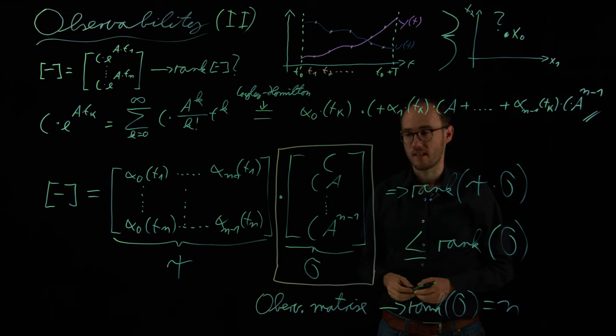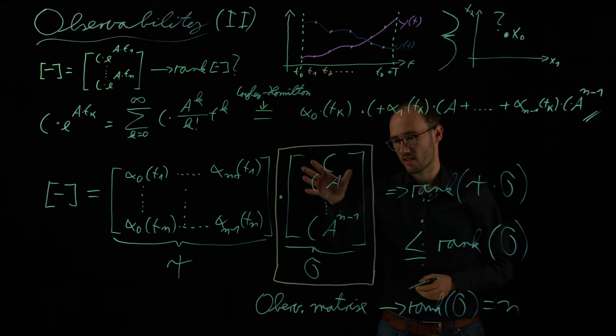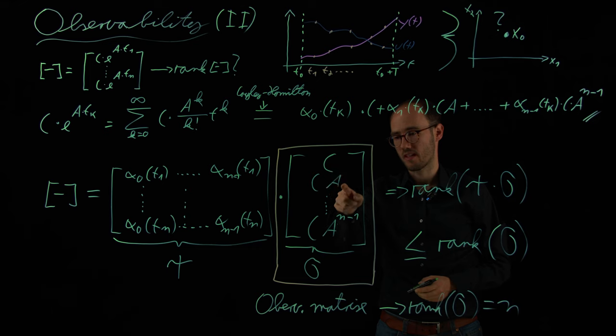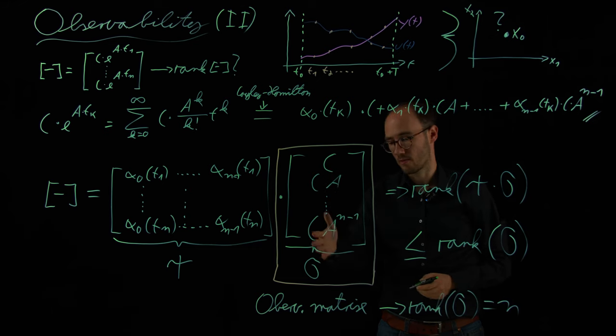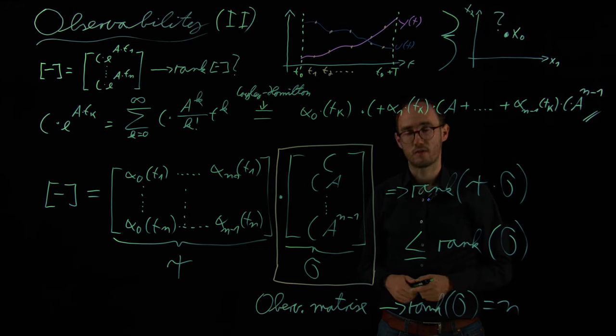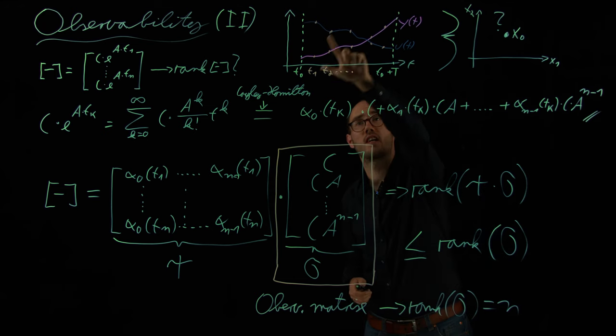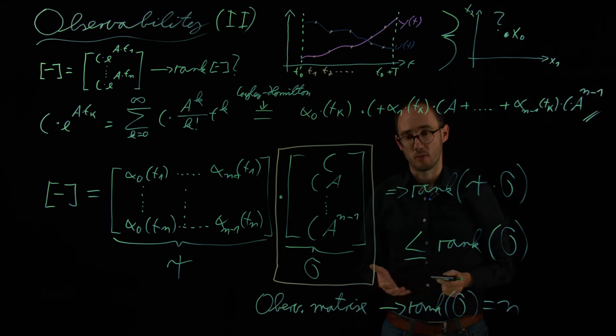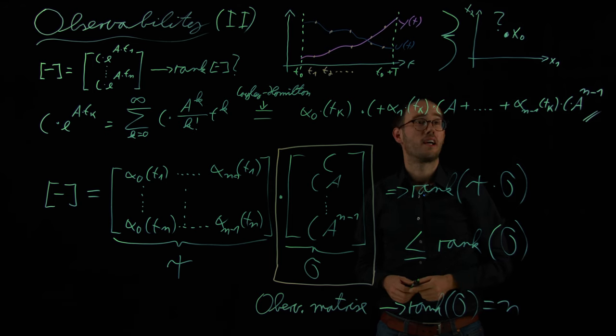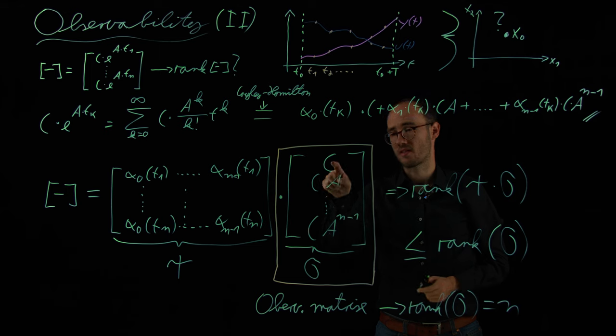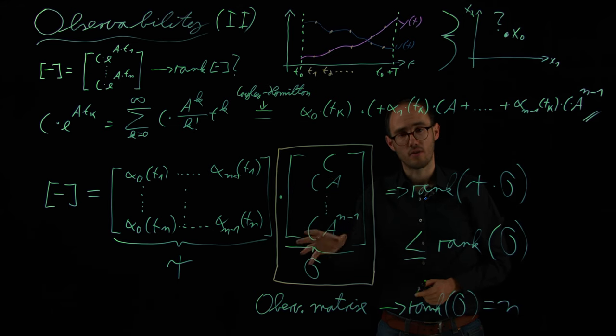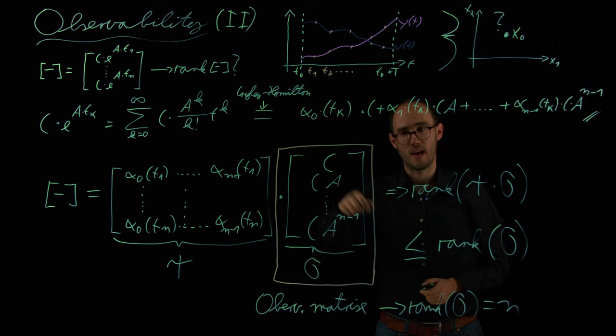Therefore, the observability question can be very easily investigated. We just need to write down the observability matrix. If we know the matrix C and the matrix A, we can just insert it here, calculate it, prove the rank. If it's full, we have full access. If it's not full, we know that at least one or multiple states cannot be fully observed, cannot be fully calculated based on these inputs and outputs. Practically what that would mean could be, for example, that we need to add additional sensors. Because this matrix C here is basically a matrix which represents which states of our systems can be measured. And I can change the rank of the observability matrix by changing the structure of C by adding more sensors to our system and therefore trying to make an unobservable system observable.